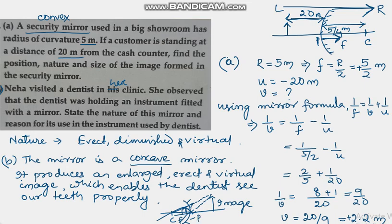If the teeth is kept between the focus and pole of the concave mirror, it will produce a virtual, enlarged, and erect image of the object, that is our teeth. This enables the doctor to see the magnified view of our teeth from behind, which would not have been otherwise possible to view from the outside. The dentist uses a concave mirror for this purpose. I hope this question is clear.